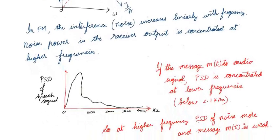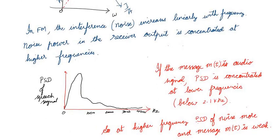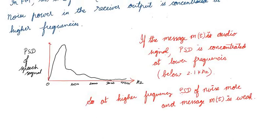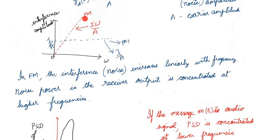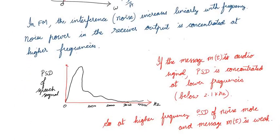Now look at the message signal. If we take an audio signal, it ranges from 0 to 4 kilohertz. Looking at the power spectral density, the power is much more at lower frequencies — up to about 2.1 kilohertz it is larger, then after that it is smaller. So the noise is more at higher frequency but the message signal is weaker at higher frequency. This is the biggest problem: the signal at higher frequency would be lost because noise is larger there. To overcome this, we use pre-emphasis.